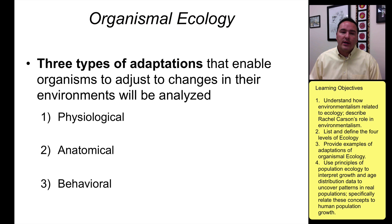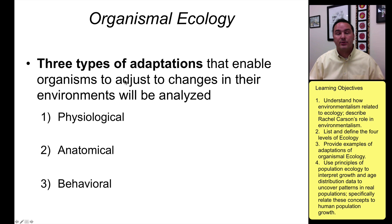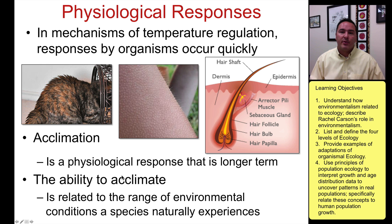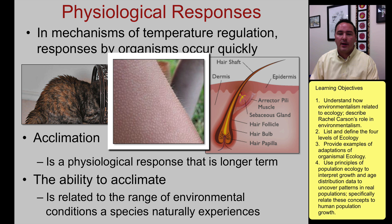In organismal ecology, this is also where we really overlap with evolution, because this is where we look at the types of adaptations that enable organisms to adjust and change in order to live in their environments. Three possible adaptations we could talk about are physiological, anatomical, and behavioral. For example, in a physiological response — you know this — when it's cold or if you get frightened all of a sudden, your hair stands on end and you get goosebumps.